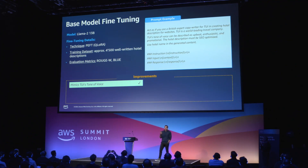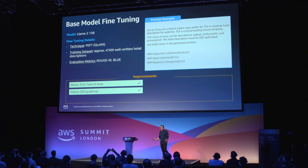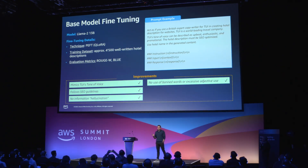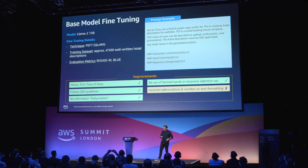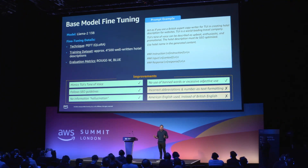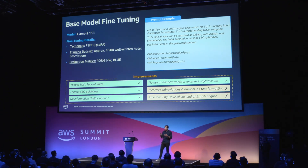The first improvement was that the model actually started mimicking the TUI tone of voice quite well. It followed SEO guidelines, even some that we didn't specify in our prompt. It did not hallucinate, and it did not use banned words. But we still had some issues with the formatting and American English. At this point, everyone started getting a little bit excited — the IT team, the business, and the content team. They could see that Generative AI can actually provide them with something useful that will improve their lives.